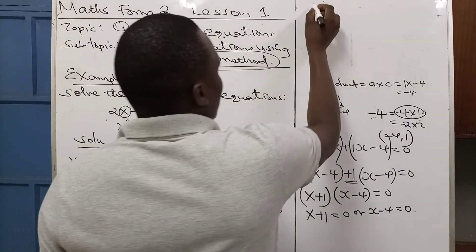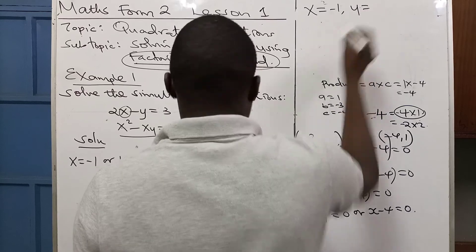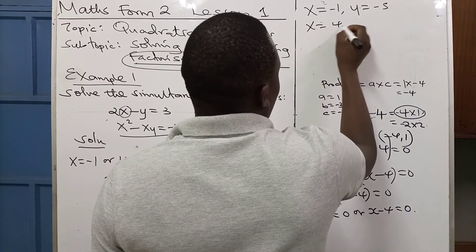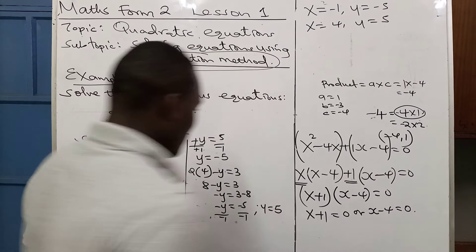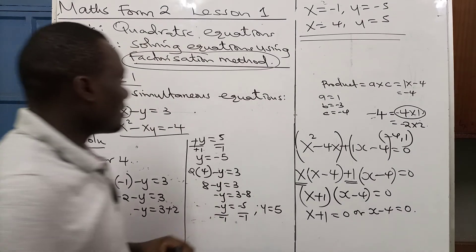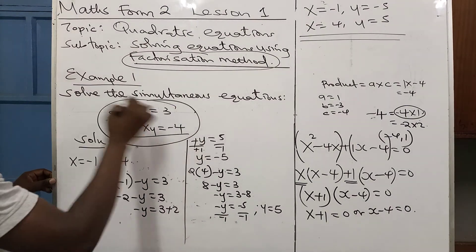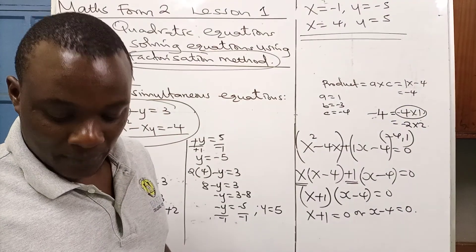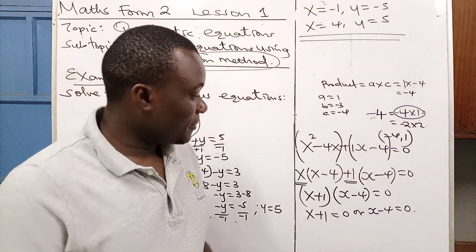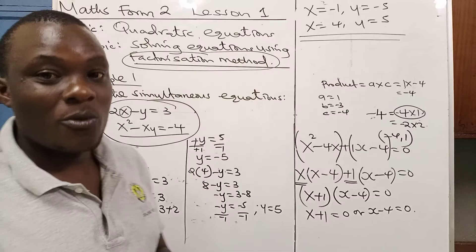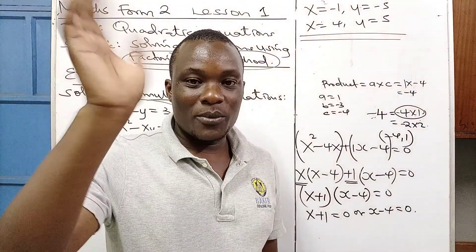We write our answers: when x equals minus 1, y equals minus 5; and when x equals positive 4, y equals positive 5. That is how we obtain the answers for these two simultaneous equations. Thank you for listening. If you have a question, go to the comments and I will answer you immediately. Thank you so much for your support — God bless you, bye bye.